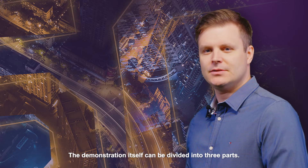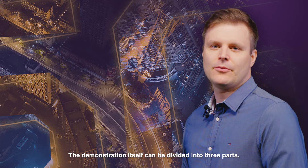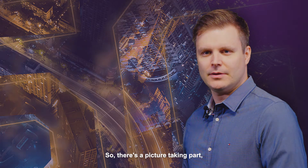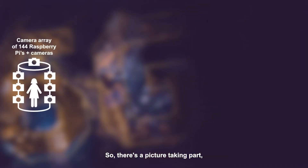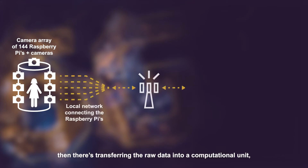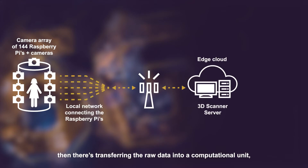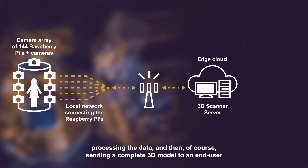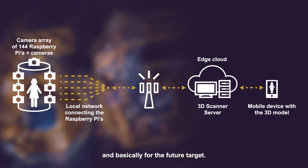The demonstration itself can be divided into three parts: there's a picture-taking part, then there's transferring the raw data into a computational unit, processing the data, and then sending the complete 3D model to the end user — and that is basically the future target.